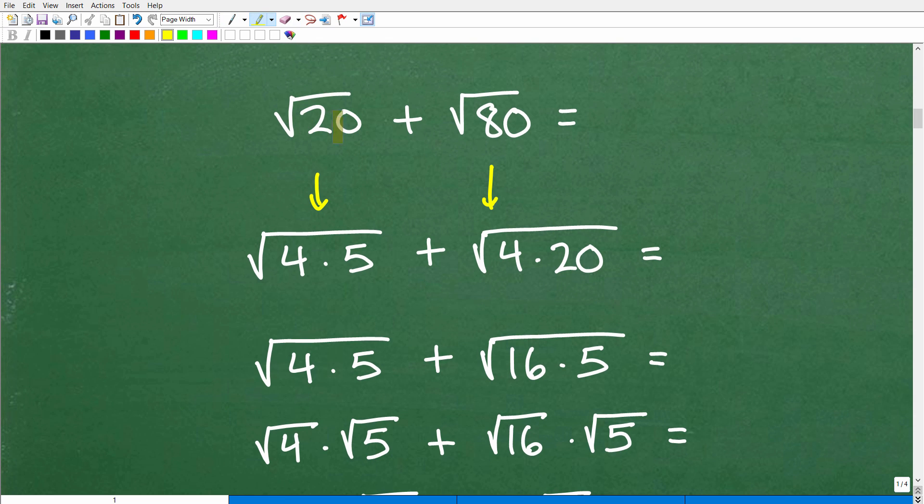So here is the square root of 20. So what you want to do, I'll get into this 80 here in a second, is you want to look at this 20 and you want to think in terms, can I factor 20 where I can get a perfect square as a factor? In other words, I can go, okay, 20 is the same thing as 2 times 10. It's the same thing as 1 times 20. But here's the deal.